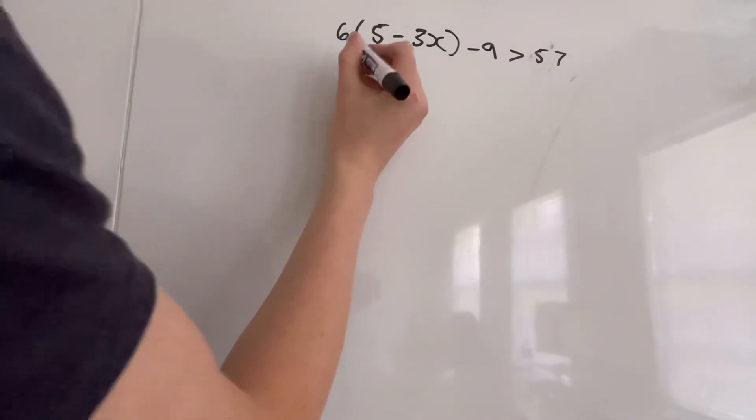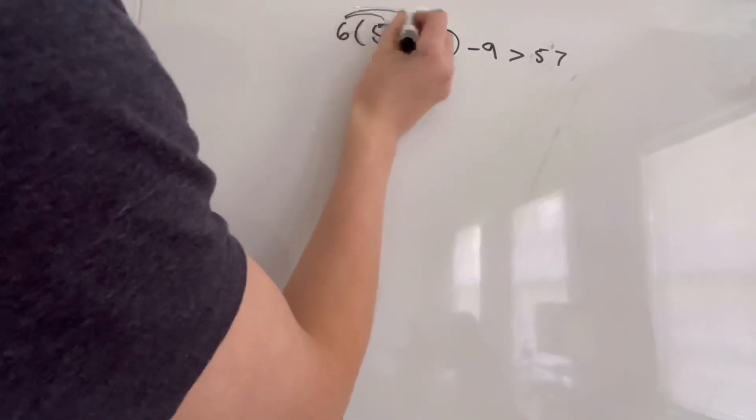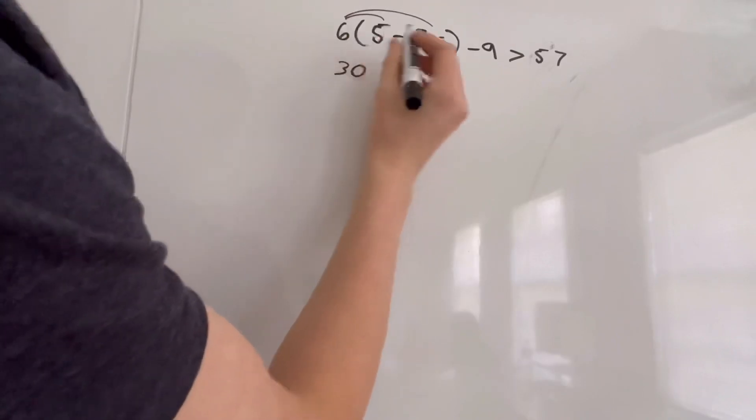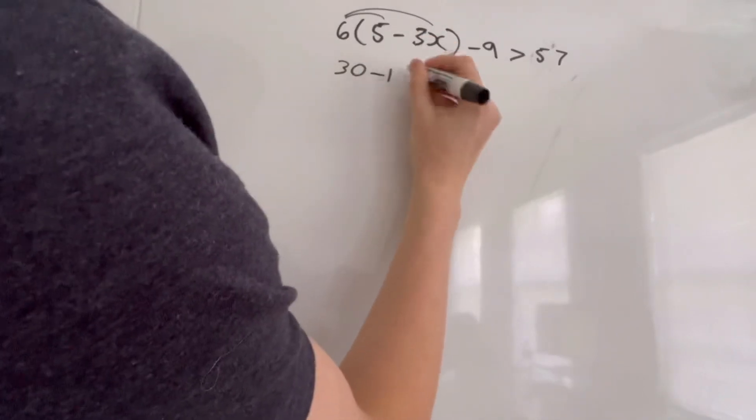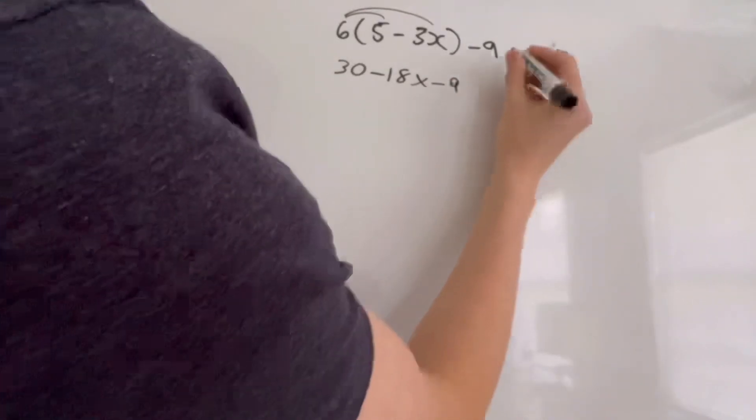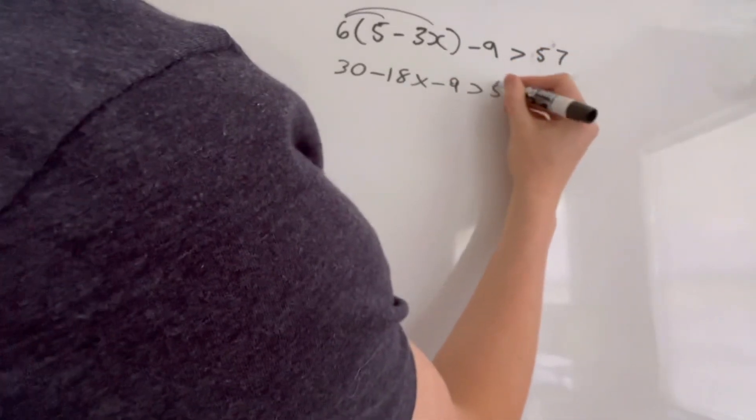So we have to distribute this first, which is 6 times 5 and 6 times negative 3. 6 times 5 equals 30, and 6 times negative 3 is negative 18x minus 9. And that is greater than 57.